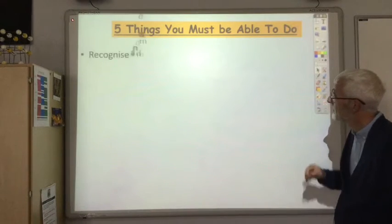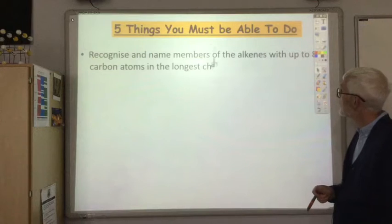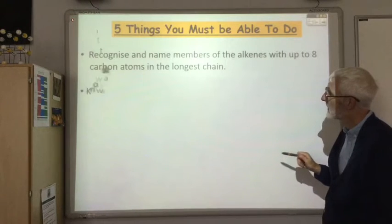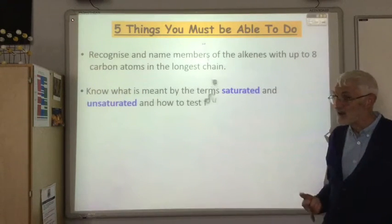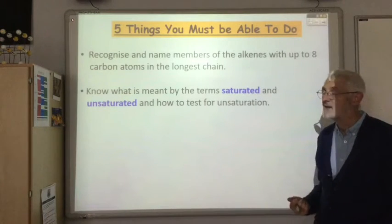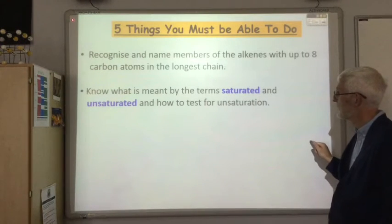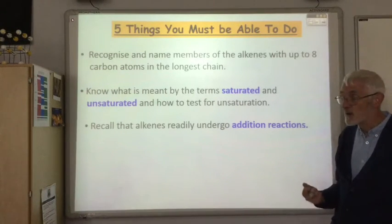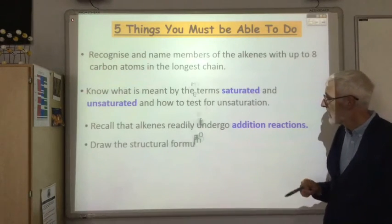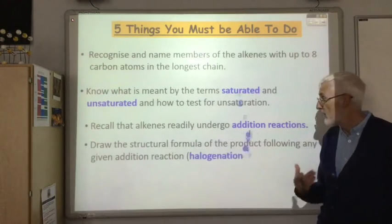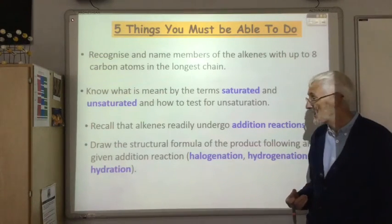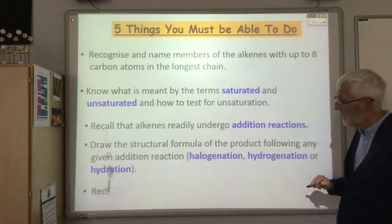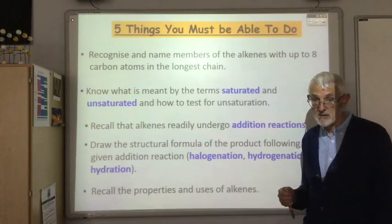Five things you should be able to do: You should be able to recognise and name members of the alkenes with up to eight carbon atoms in the longest chain. You should know what is meant by the terms saturated and unsaturated, and know how to test for unsaturation. You should recall that alkenes readily undergo addition reactions. You should be able to draw the structural formula of the product following any of the addition reactions: halogenation, hydrogenation, or hydration. And finally, you should be able to recall the properties and uses of the alkenes.